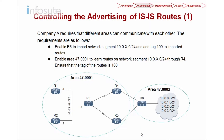Let's look into the next requirement. Company A requires that different areas can communicate with each other. Enable R6 to import network segment 10.0.x.0/24 and add a tag to the import route. We are going to use the import route command for all 10.x networks, adding a tag of 100. We'll use the command 'import route direct' with the tag of 100. Remember that whenever we use the tag, the router has to enable the cost-style as wide.